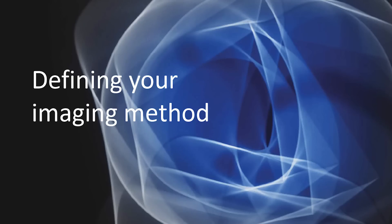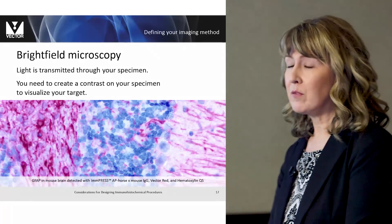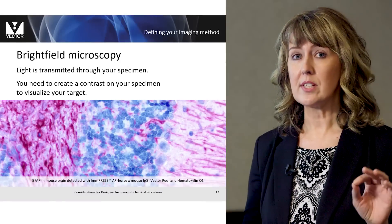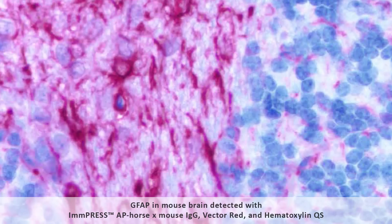The first thing you'll need to do in designing your immunohistochemistry procedure is to define your imaging method. Typically, you will either be visualizing your results using brightfield or fluorescence microscopy. Brightfield microscopy involves light being transmitted through the specimen, so you'll need to create a contrast in your tissue section in order to visualize your target antigen. You can visualize the GFAP in this mouse brain, which has been detected with ImmPRESS AP/HRP and a Vector Red substrate. Enzyme-based detection reagents produce a colored precipitate in your tissue section at the site of your tissue antigen, allowing visualization under your brightfield microscope.